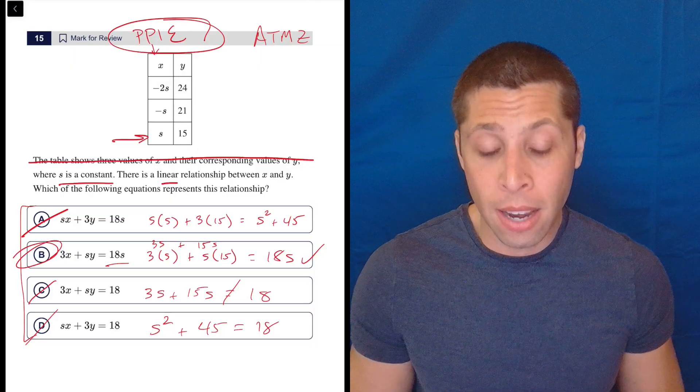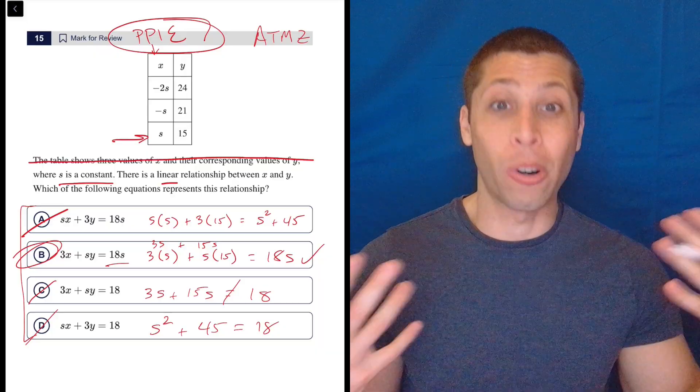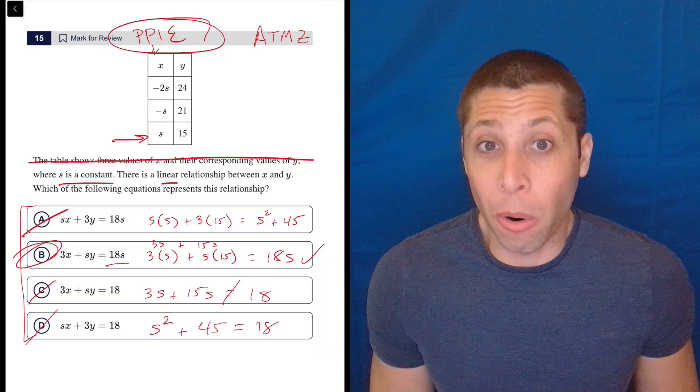You could also just by hand, once you've made a number for s, plug that in to all of these. I actually made s zero, which makes the points crazy, but still works. And so, that was actually more work than I needed.